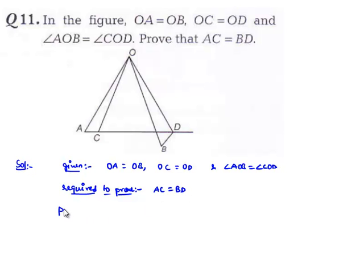So, now let us prove that. Let us consider that angle AOB is equal to angle COD. Let us subtract angle COB from both.